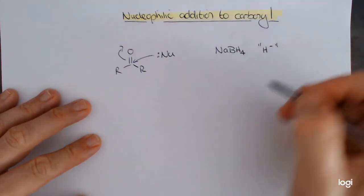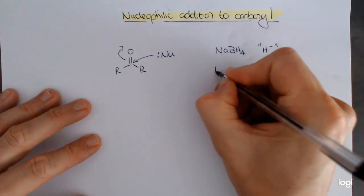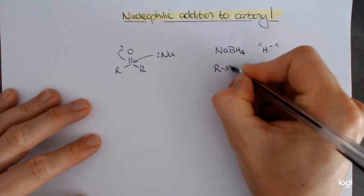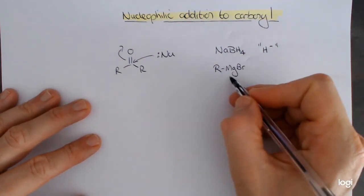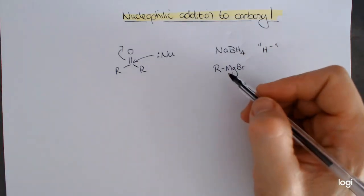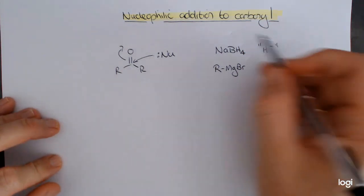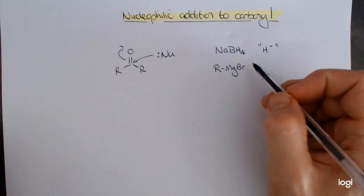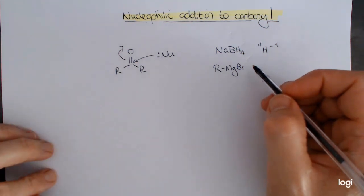I'm going to put it in inverted commas because it's something important we need to think about with that. And the other one we're going to look at are the Grignard reagents with something which is like RMgBr. Both of these are irreversible reactions in the carbonyl group, and so they kind of fit together, whereas the other two nucleophiles that we're going to look at are not, so we'll do them separately.